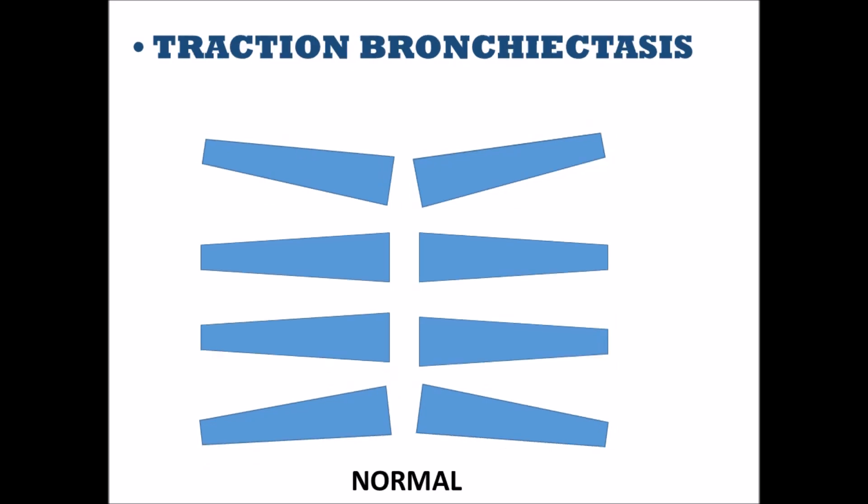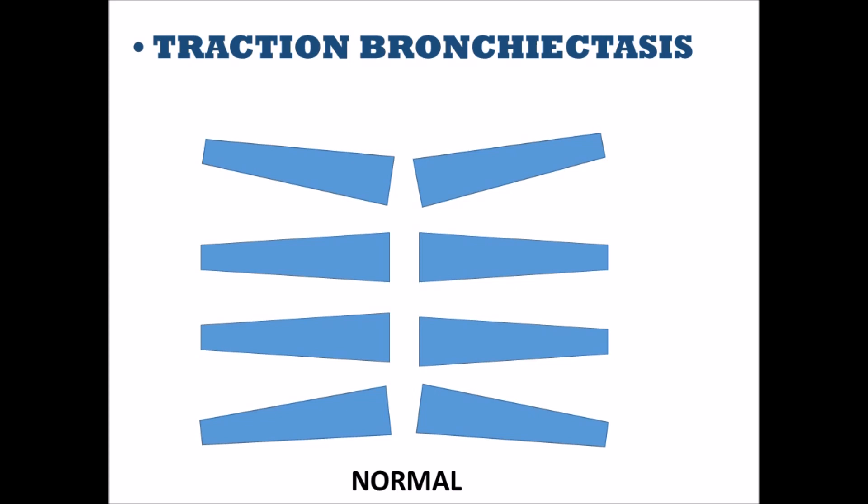Traction bronchiectasis: in this condition, bronchioles that are normal to begin with are kept dilated by traction from surrounding abnormal lung parenchyma, for example in pneumonia.